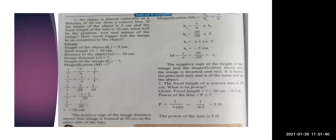To find the position, size, and nature of the image, we need to find V (image distance), H2 (image height), and magnification. Given: H1 = 5 cm, F = +10 cm (convex lens), U = −20 cm. V, H2, and magnification are unknown. First, we find V using the lens formula: 1/V − 1/U = 1/F.